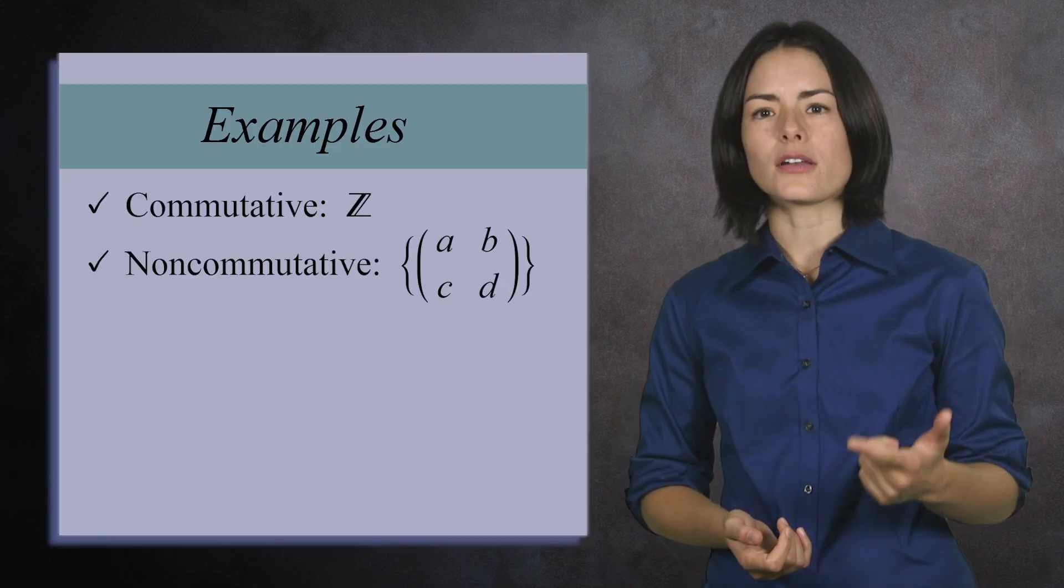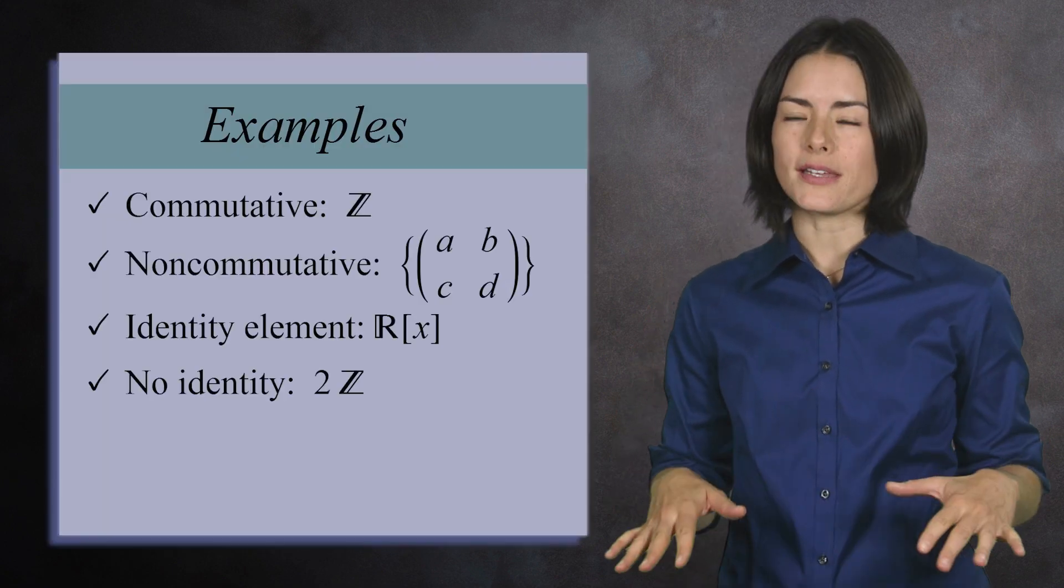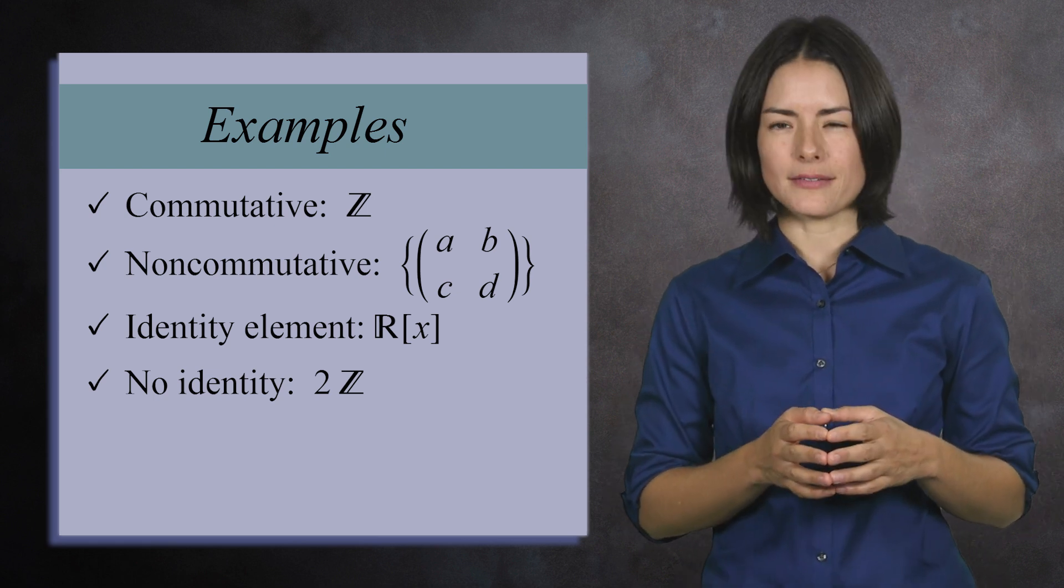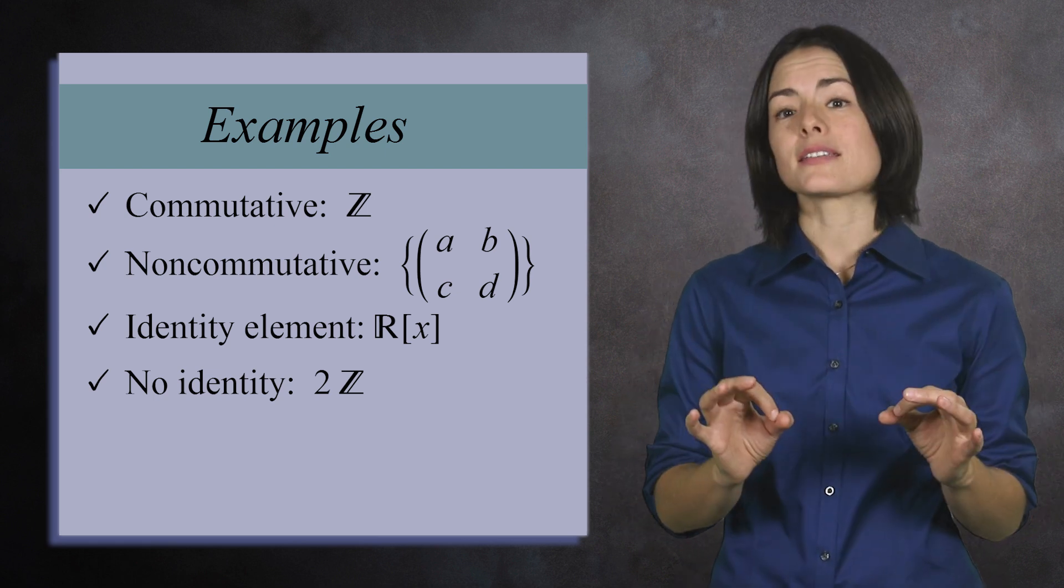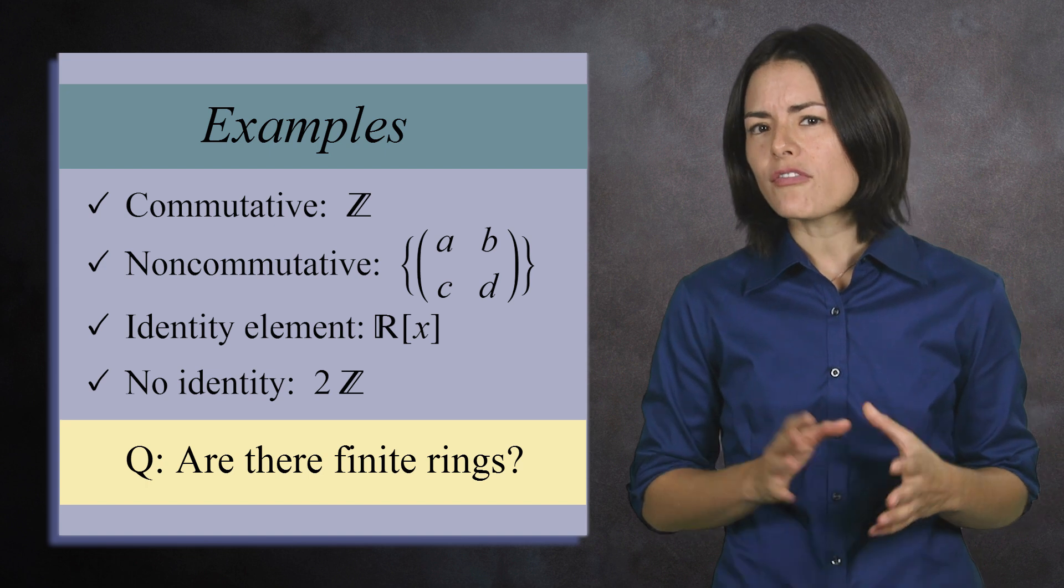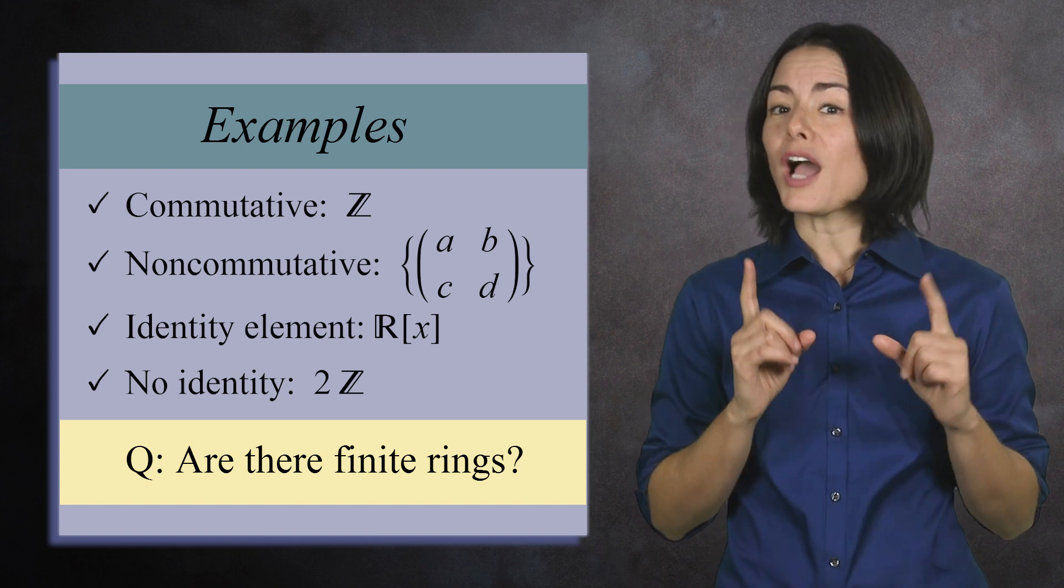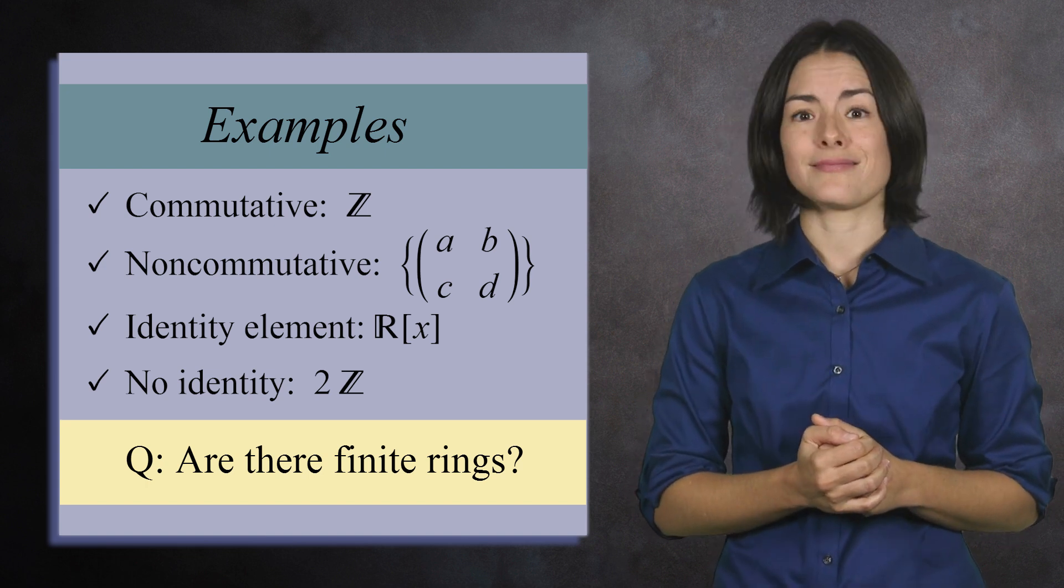Already we've seen a wide variety of rings. Commutative, non-commutative, identity, no identity. But all the examples have had something in common. They have all been infinite. Are there rings with only a finite number of elements? I'm glad you asked, because yes, yes there are.